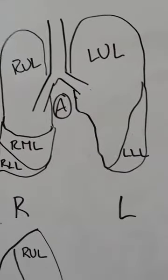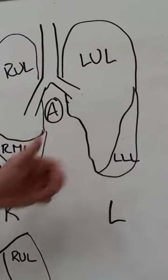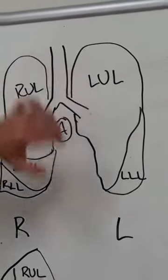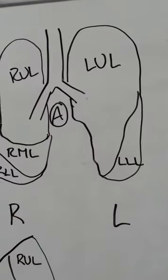On the left hand side you're going to have two segments and eight bronchopulmonary segments. Here you have the left upper lobe and the left lower lobe.